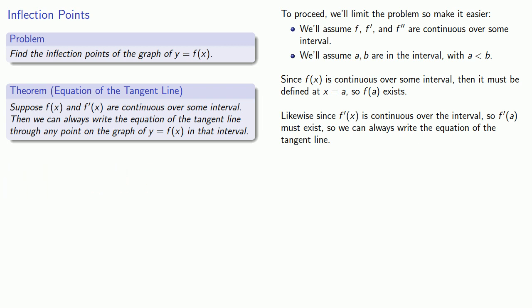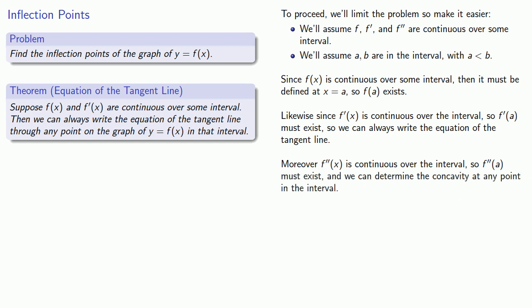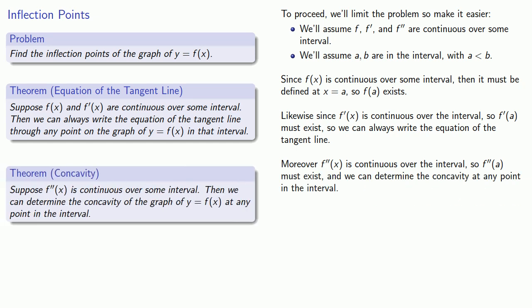Moreover, since we know f prime is continuous over the interval, we know f double prime must exist. And so we can determine the concavity of the graph at any point in the interval.